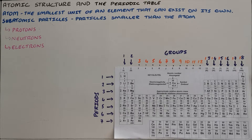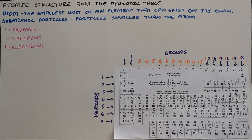An atom is the smallest unit of an element that can exist on its own, and atoms are made up of subatomic particles. Subatomic means that these are particles that are smaller than the atom — these are the particles that we would find inside the atom.